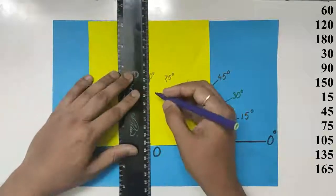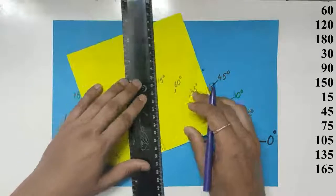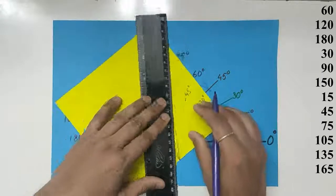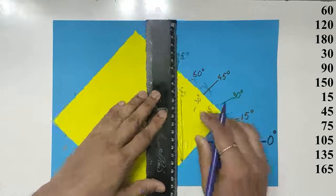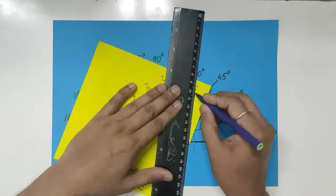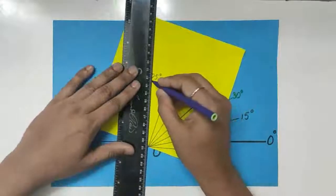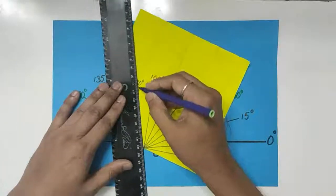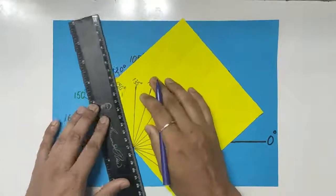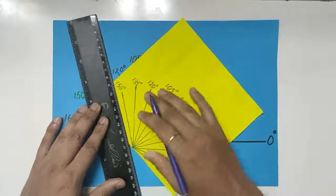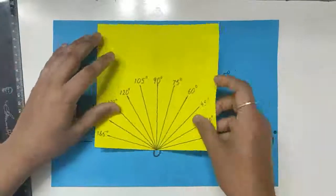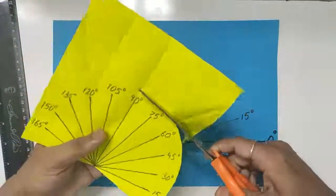Now you can just draw the lines joining them to the center, and you have made your paper protractor. Now you cut the extra bit off and compare with your constructions. They are absolutely perfect.